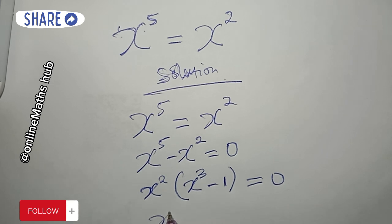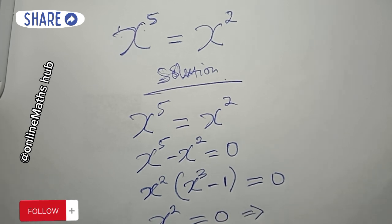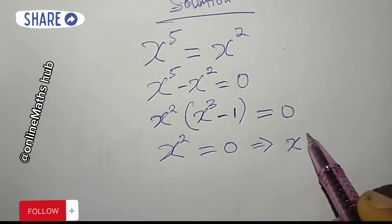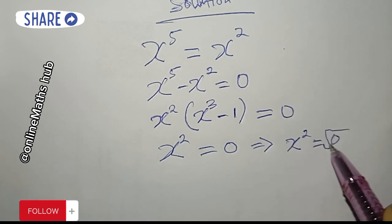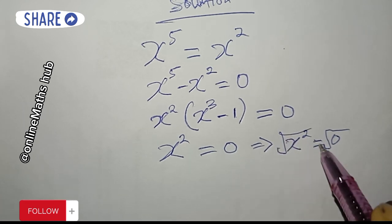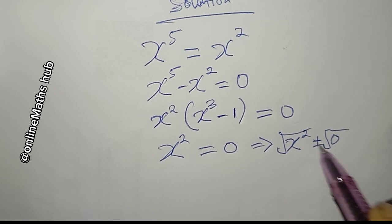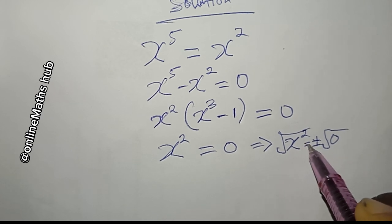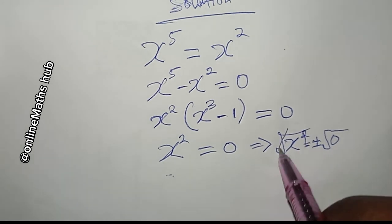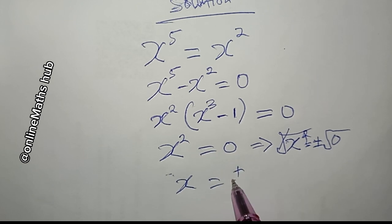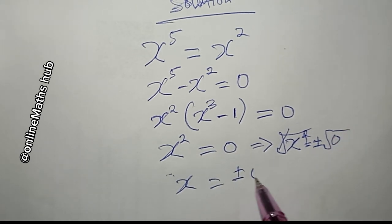So we have x power 2 times (x power 3 minus 1) equals zero. Using the zero product rule, x power 2 equals zero. Taking the square root of both sides gives x equals plus or minus zero, which is simply x equals 0.